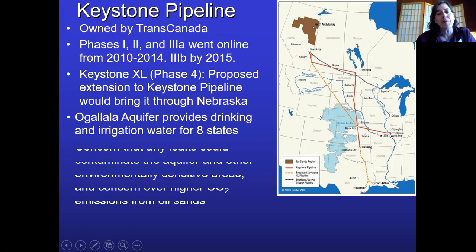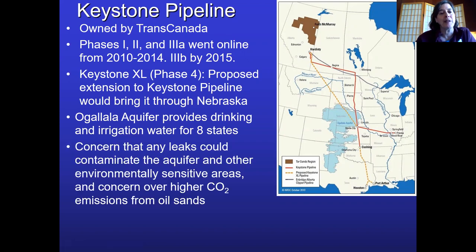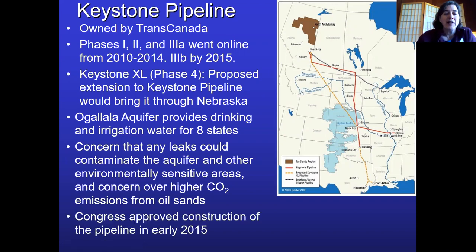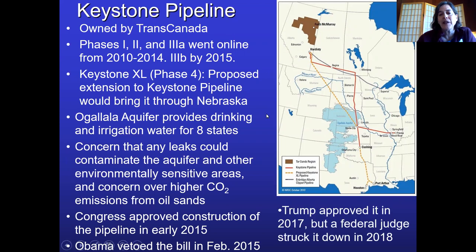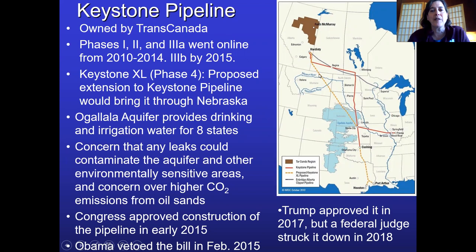A lot of people have been opposed to the Keystone XL pipeline. If it were to break and contaminate the aquifer, you'd be talking about a huge water source destroyed, along with damage to Native American lands. Congress approved construction in early 2015, Obama vetoed the bill, Trump approved it, but it was blocked by a federal judge. It remains an ongoing controversy.